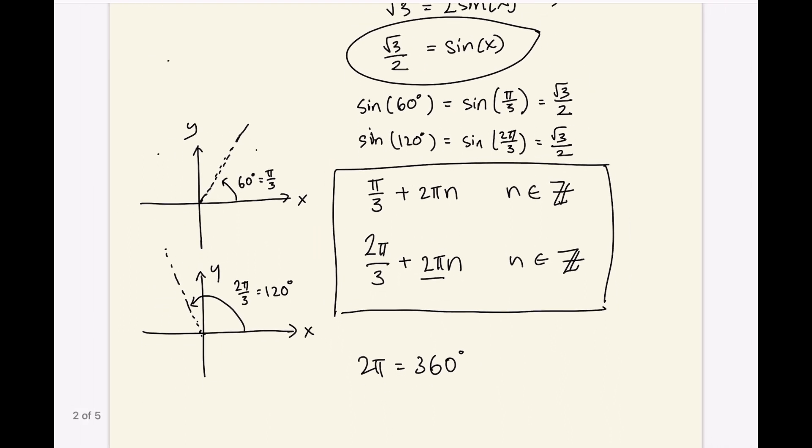And you can say this in different ways if you want to. You just have to pick a starting angle and then you add your multiples of 2π.